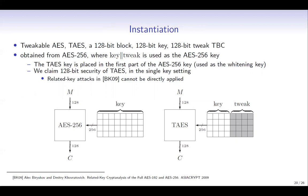T-AES is obtained from AES-256, where the concatenation of the key and tweak is used as the AES-256 key. The T-AES key is placed in the first part of the AES-256 key, and the remaining part is used as the tweak, so that the key is also used as the whitening key. This is a simple tweakable block cipher, and we claim 128-bit security of T-AES in the single-key setting. We remark that previous related-key attacks against AES-256 cannot be directly applied.